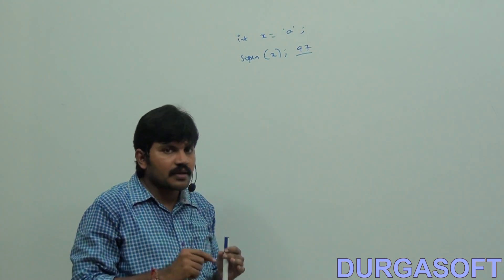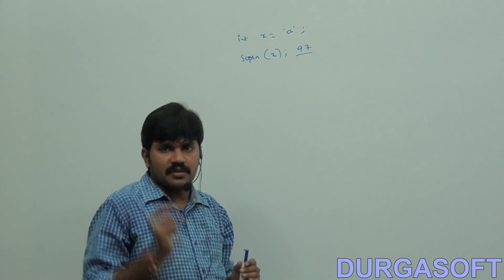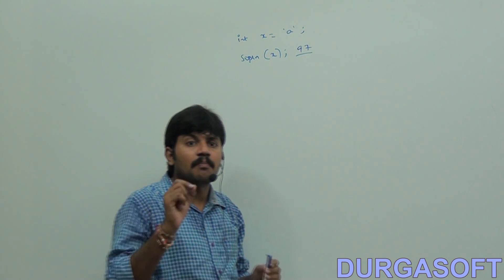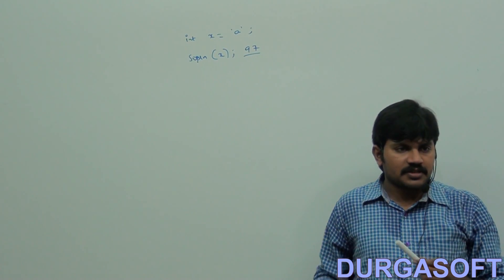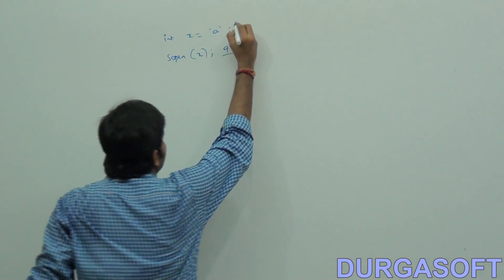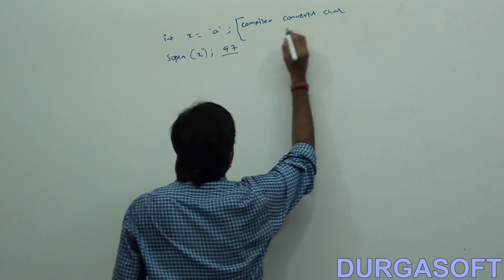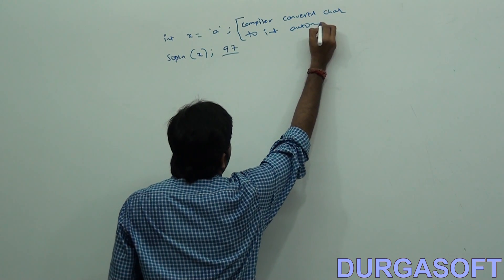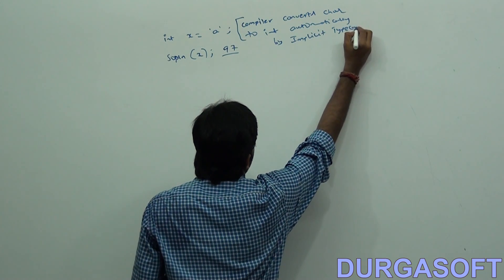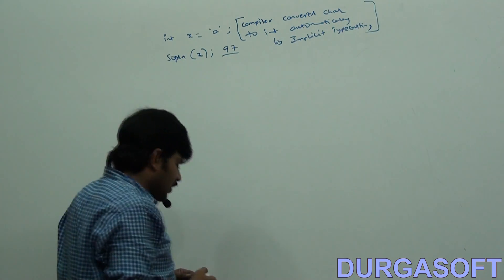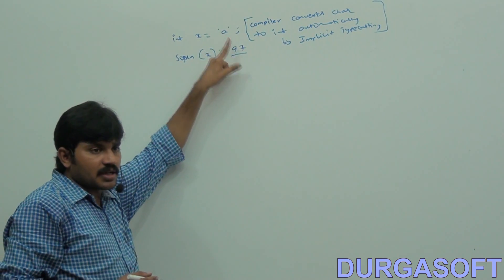Someone is converting my char to int type. Who is converting? Internally, the compiler is responsible. This type of conversion — this type of typecasting — is nothing but implicit typecasting. The compiler converts char to int automatically by implicit typecasting. I provided char but I am getting 97.